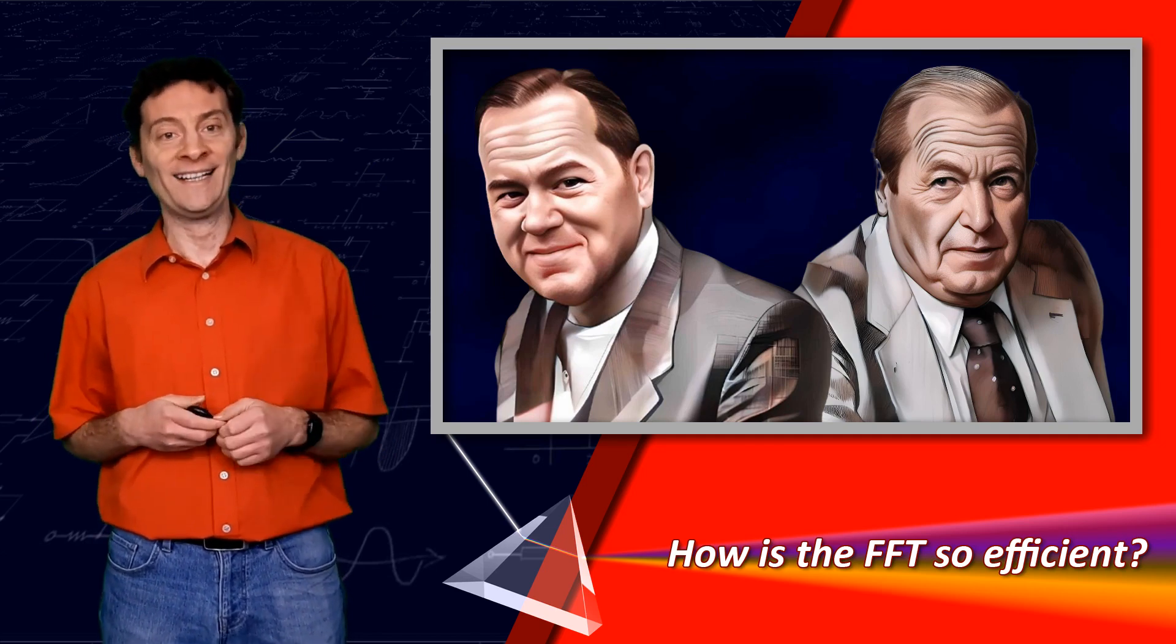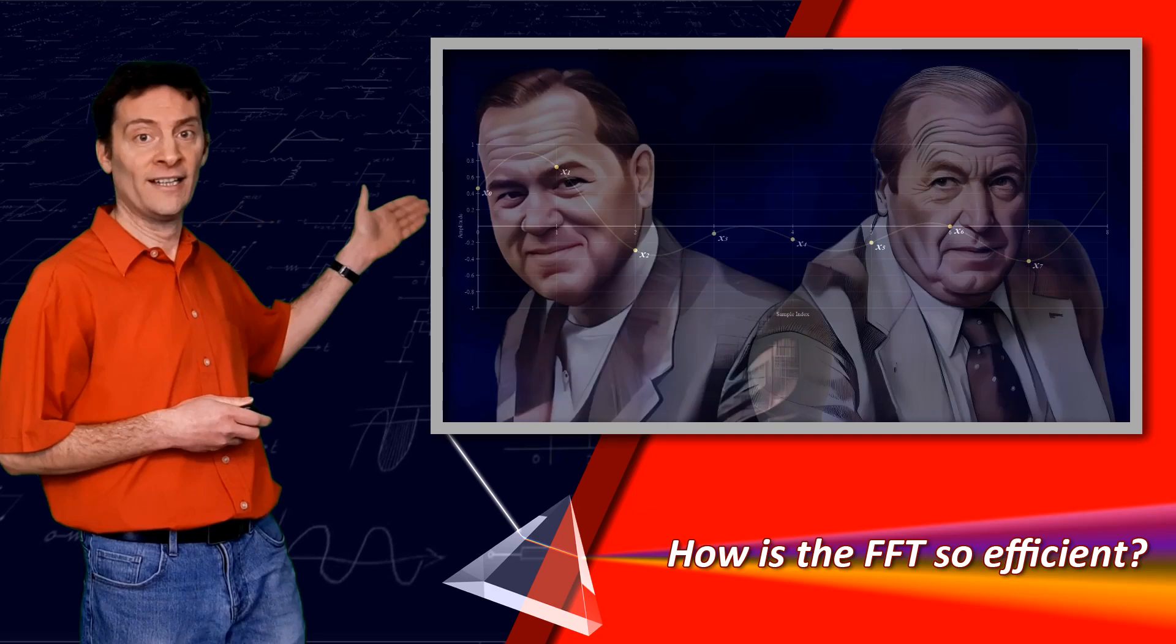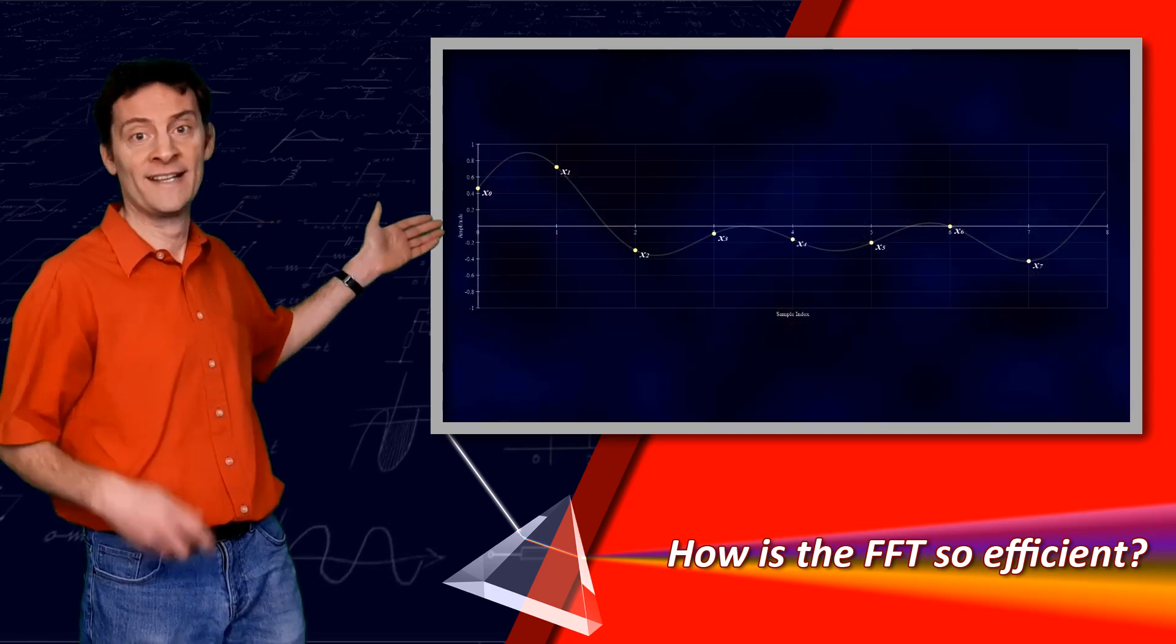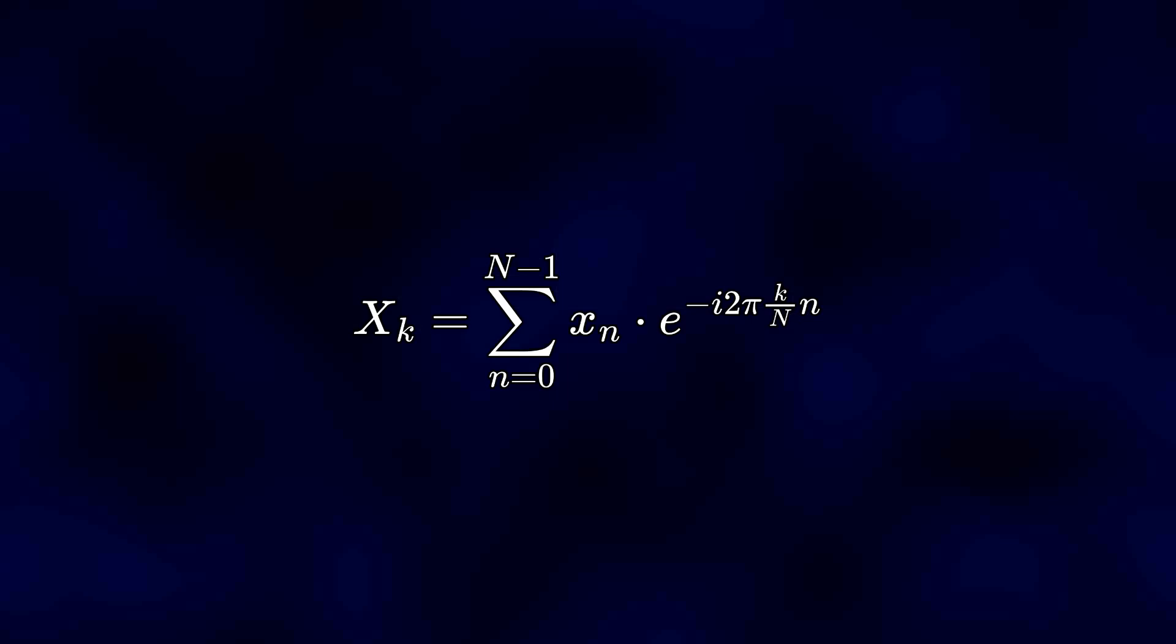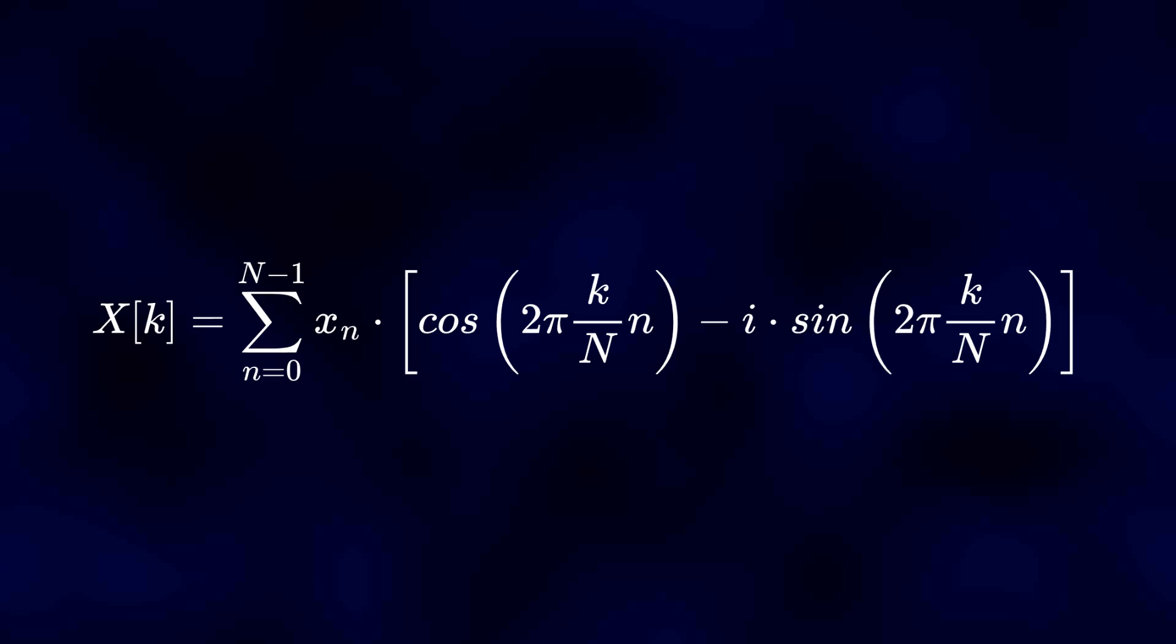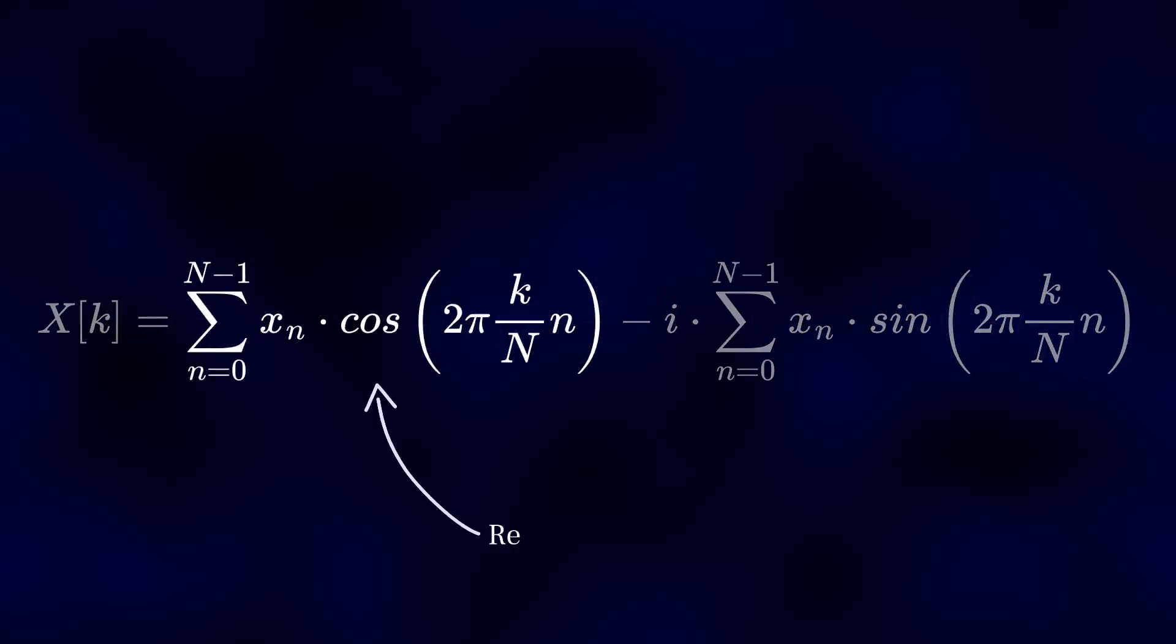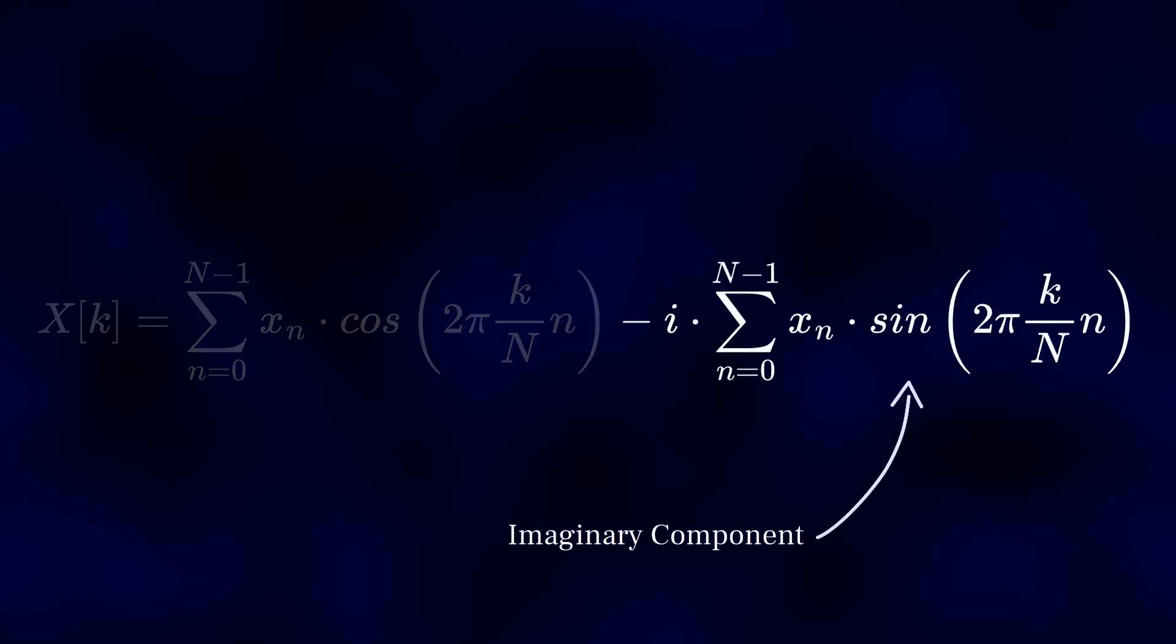Let's look at how we would calculate the DFT for this signal here, containing a mere 8 samples. Here's the DFT equation. Let's rewrite it in its polar form and split the calculation into two sums: one for the real or cosine component, and the other for the imaginary or sine component.